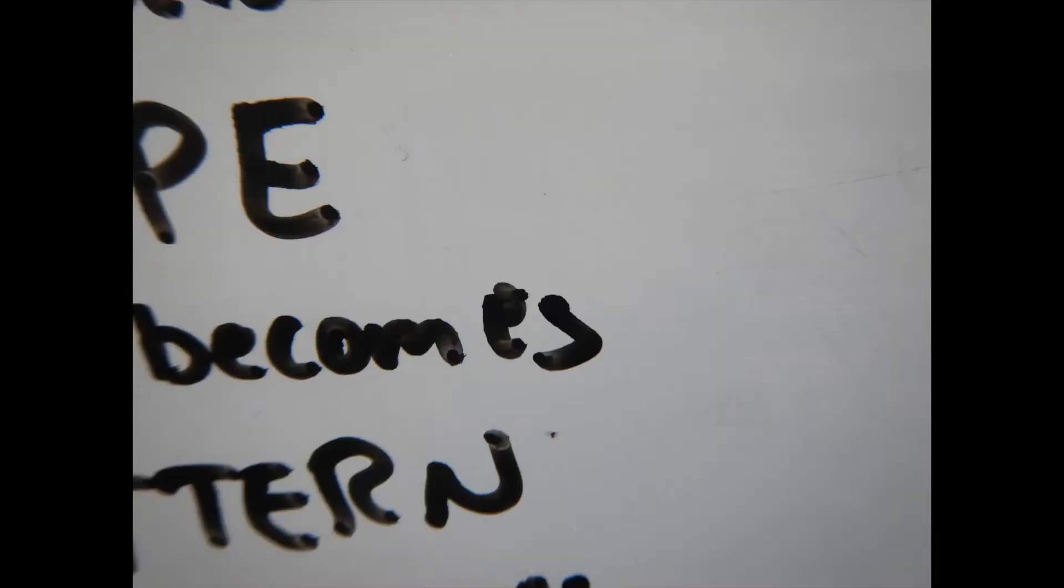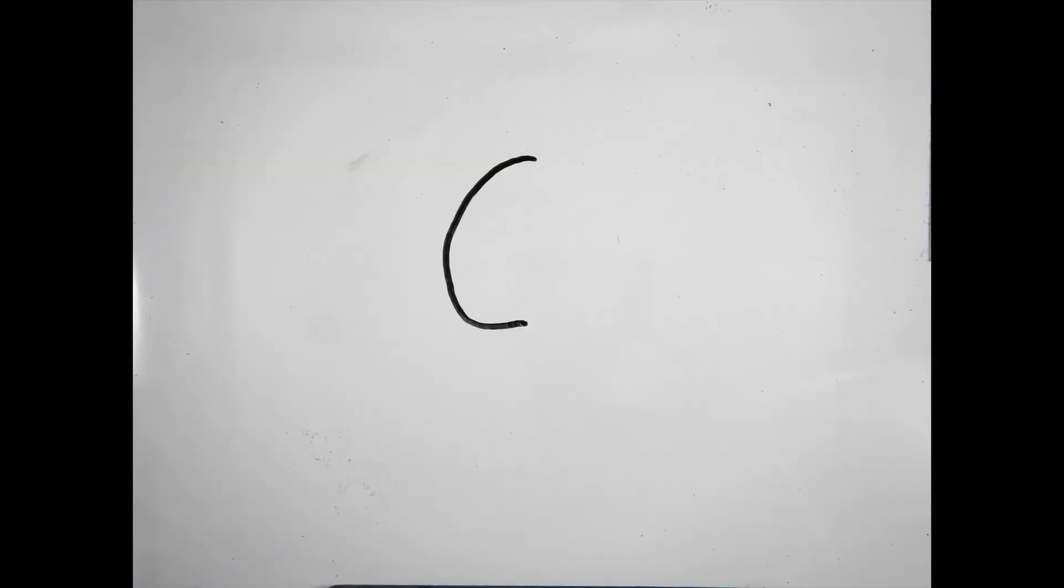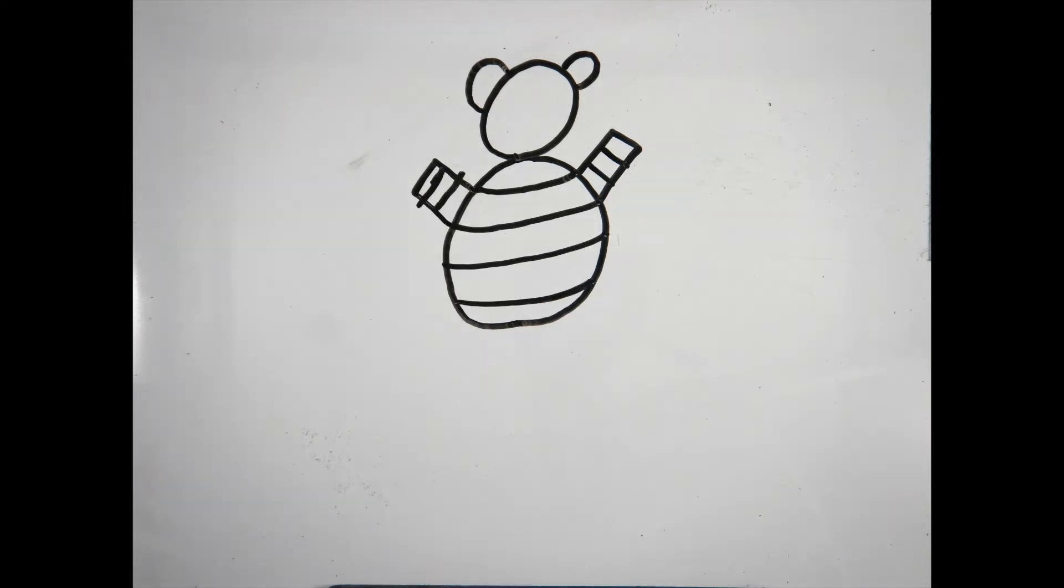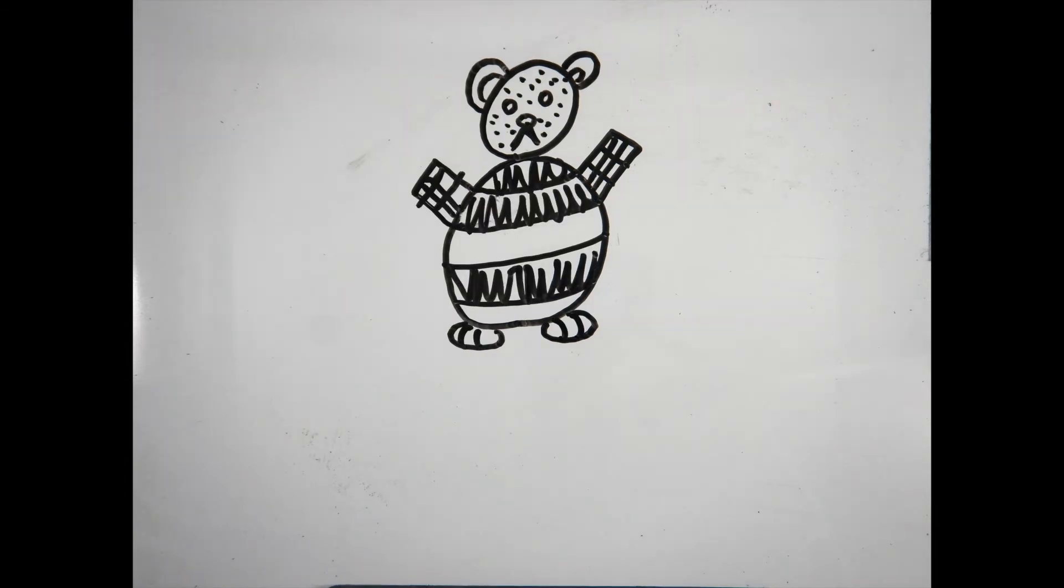When we say all those things about becomes and has and shows or can have, let me show you what I mean. I can use a line to make a shape, and then I can take a shape. When I start adding a bunch of other shapes, it starts looking more interesting. But then I can turn those shapes into patterns like these stripes. I can make those patterns more interesting by filling them with texture, which is just a pattern that repeats even more and makes it look like it feels like something else.